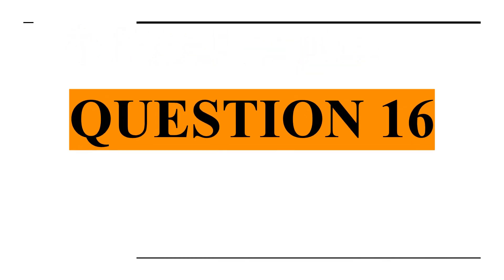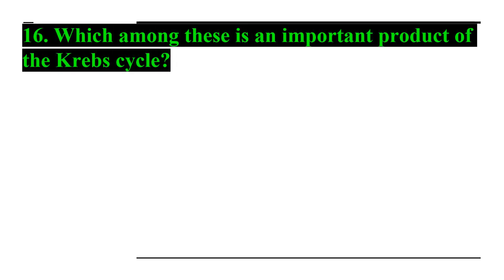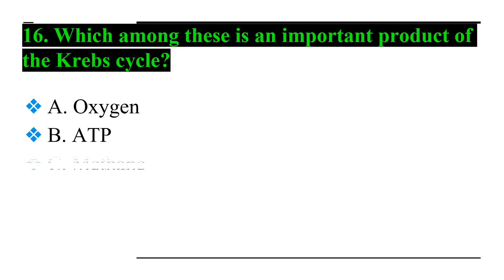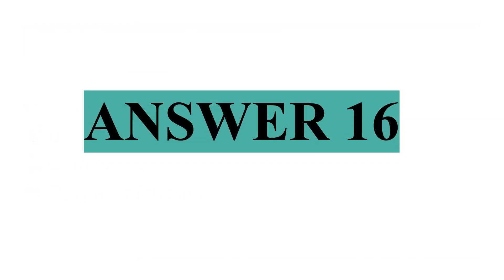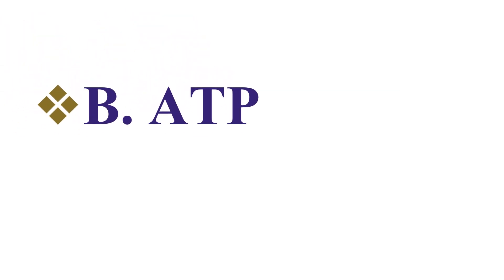Question number sixteen: which among these is an important product of the Krebs cycle? Option A: oxygen, Option B: ATP, Option C: [not completed], and Option D: none of the above. Answer number sixteen: Option B — ATP.